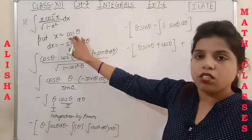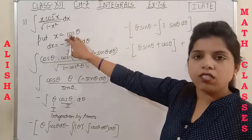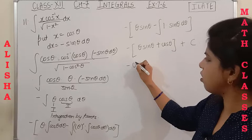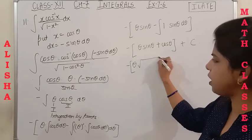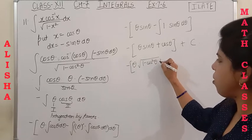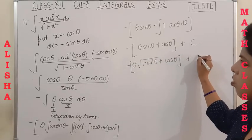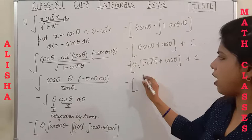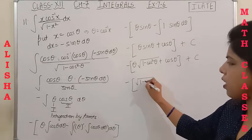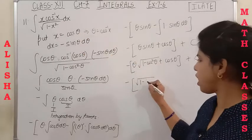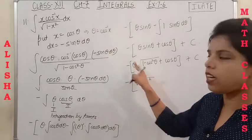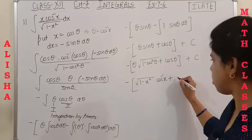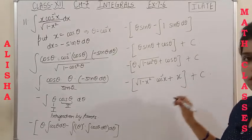Since our answer must be in terms of x, and cosθ = x, we convert back. sinθ = √(1−cos²θ) = √(1−x²). The value of θ is cos⁻¹x. Substituting: the answer is √(1−x²)·cos⁻¹x + x + C.